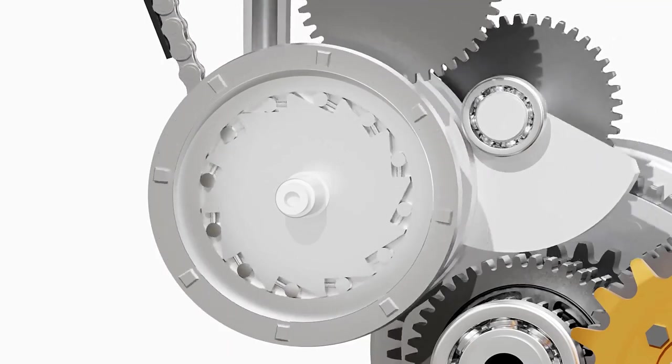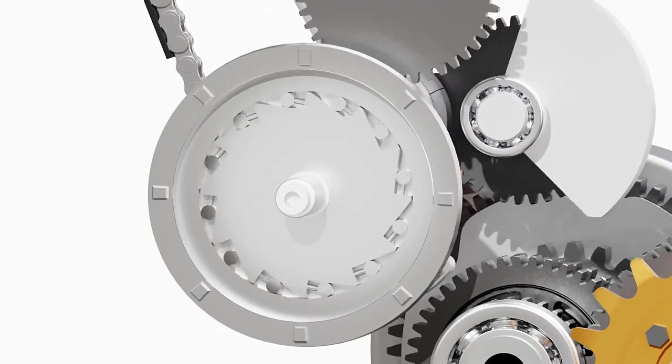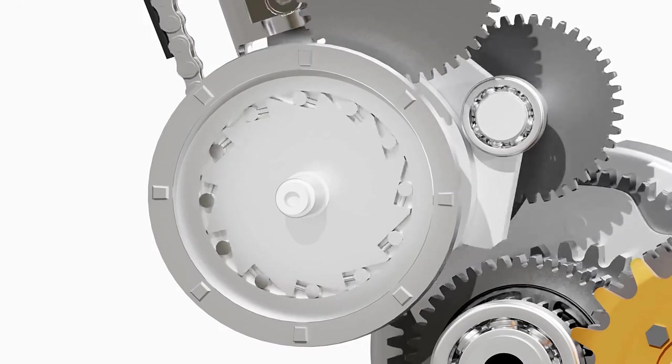Once the inner race starts spinning faster than the outer race, the rollers get released, causing the inner race to spin freely.